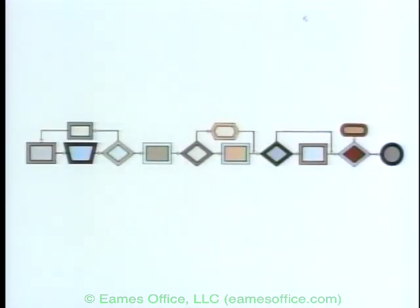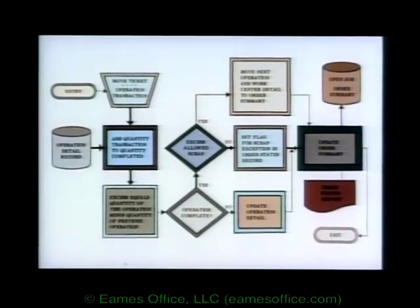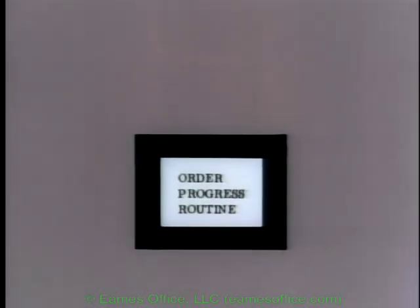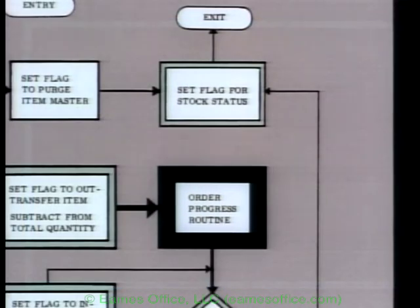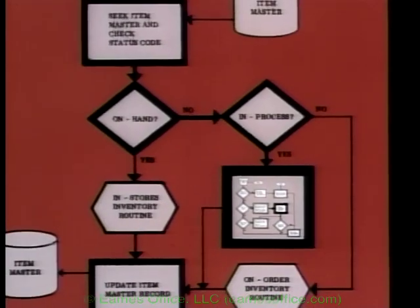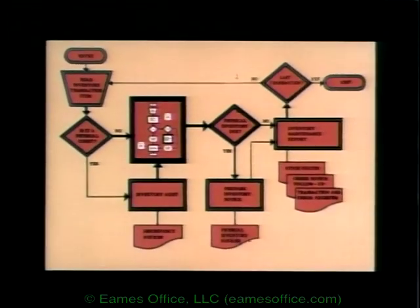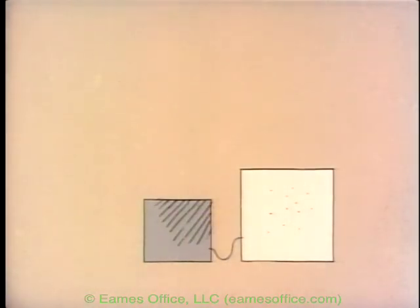At this scale, the flowchart of a program in any field would look much the same. Once worked out, it can be given a name and called for as part of a larger program — a subroutine, a program called for as part of a larger program. Of course, the larger program can be used in building still larger programs, and so on. Much of the power of the computer lies in the fact that in an instant it can call on the accumulation of years of program structuring.